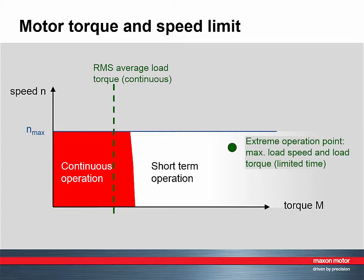The speed limit of Maxon motors corresponds to the upper limit of the operating range diagram. However, it is essentially the required torque that defines the motor size. We have to select a motor that, on average, can produce the necessary torque. Hence, we need a motor with the nominal torque larger than the RMS average load torque. Short load peaks, as during acceleration, may be located in the short term operating range.